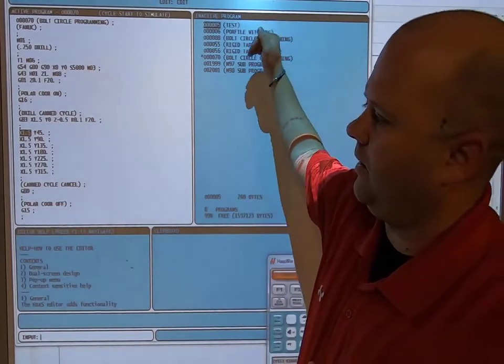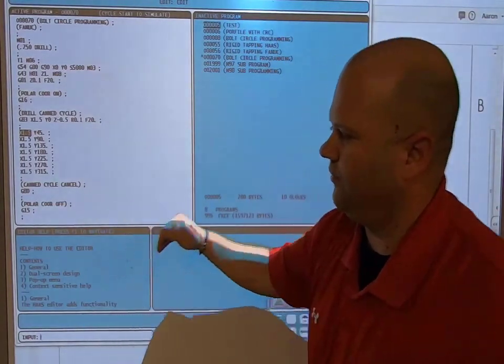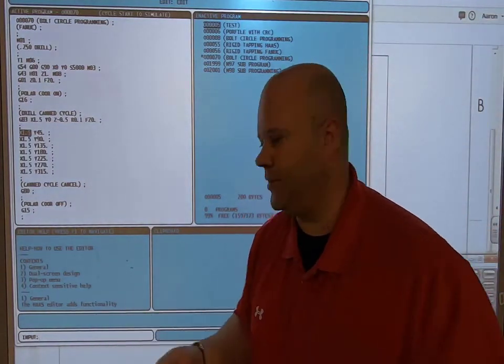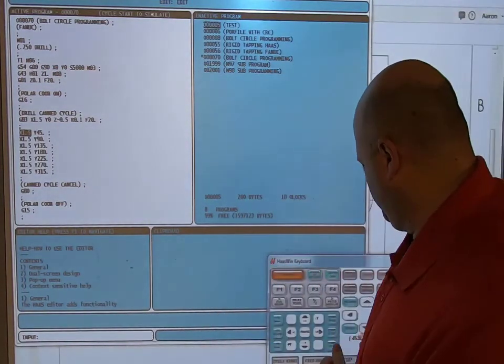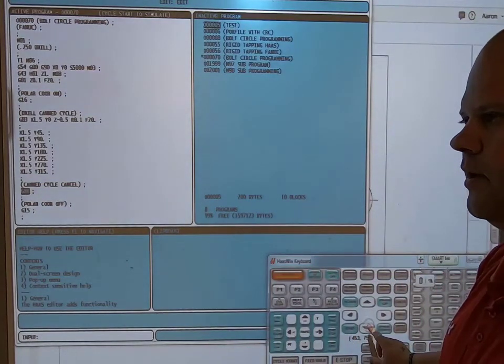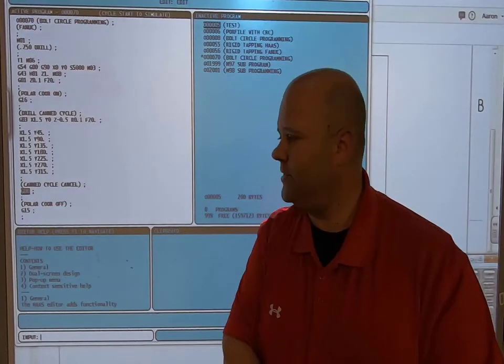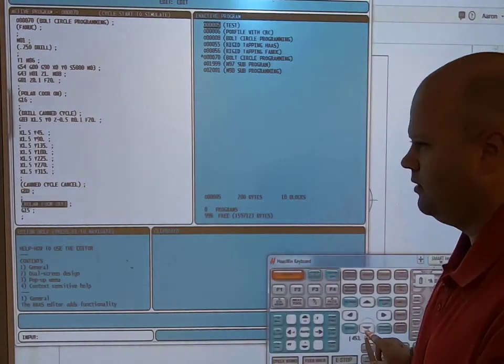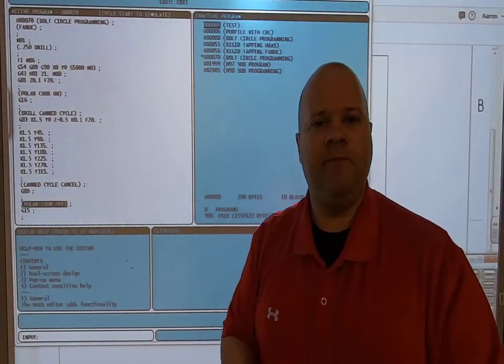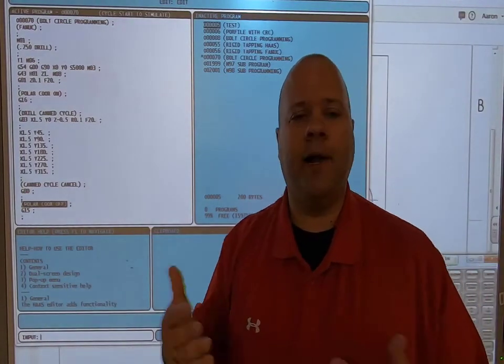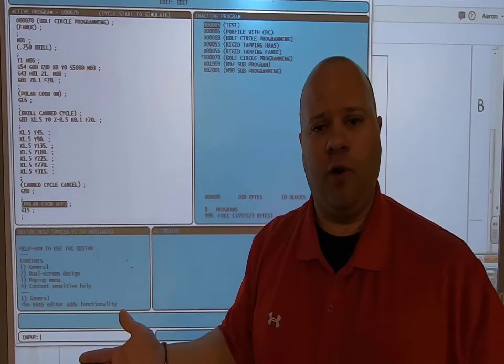My first one was at Y zero. Then my next one is at Y 45. So as I keep going, I got 45, 90, 135, 180, 225, 270, 315. So that's how it works. And then very important, when you are done, canned cycle cancel. You have to turn off the canned cycle and then G15 is polar coordinates off. So once I turn it off, I go back to my programming, I can move to a different hole. That's how I would do it on the Fanuc style programming.